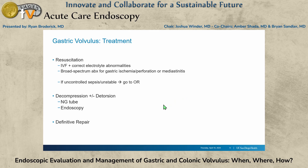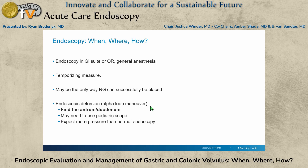In many of these cases we can start with decompression plus or minus detorsion — that's the NG tube — and what we care about here today is endoscopy. For gastric volvulus patients, I recommend general anesthesia and airway protection. These people are coming in vomiting with gastric outlet obstruction, so either in your endo suite or OR, but with a breathing tube in place. Endoscopy is a temporizing measure to get you to the point where you can do definitive therapy, and it may also be the only way the NG tube can successfully be placed.